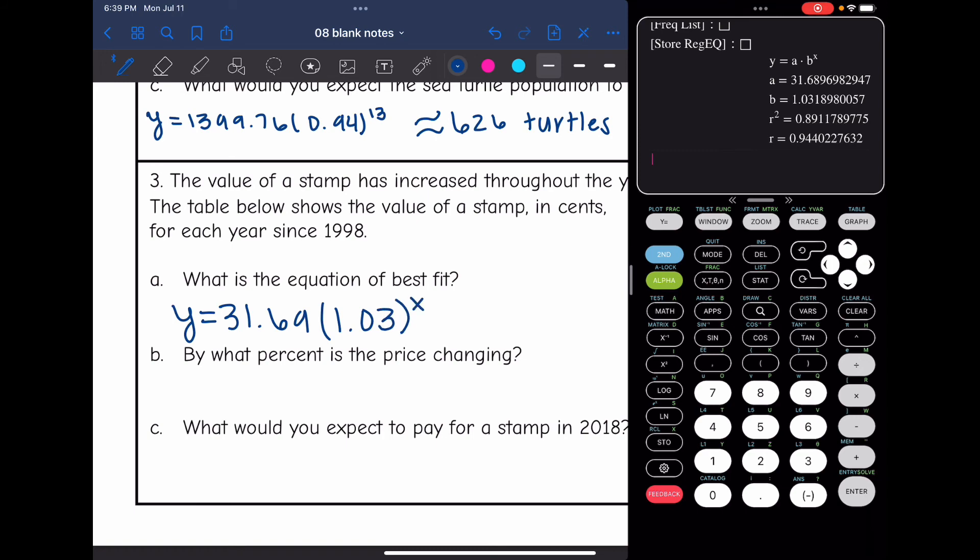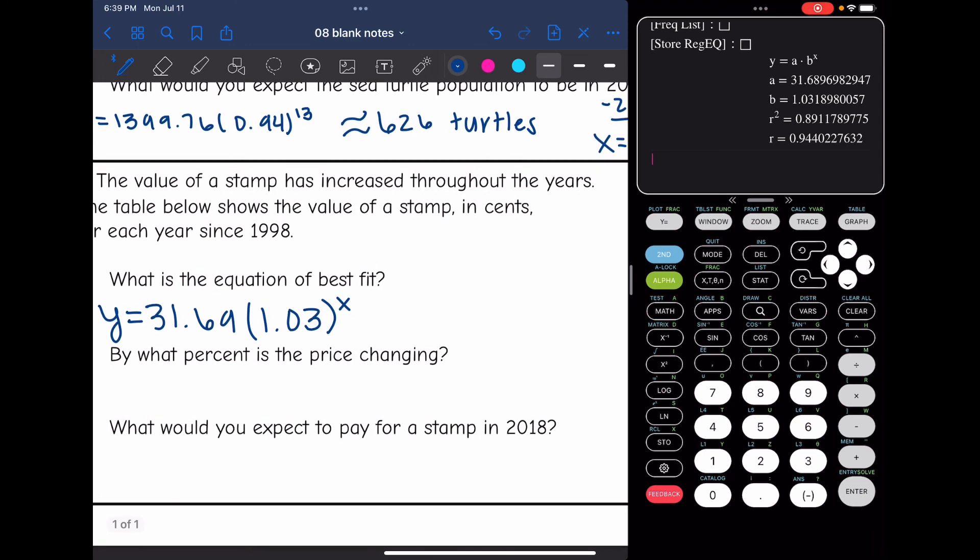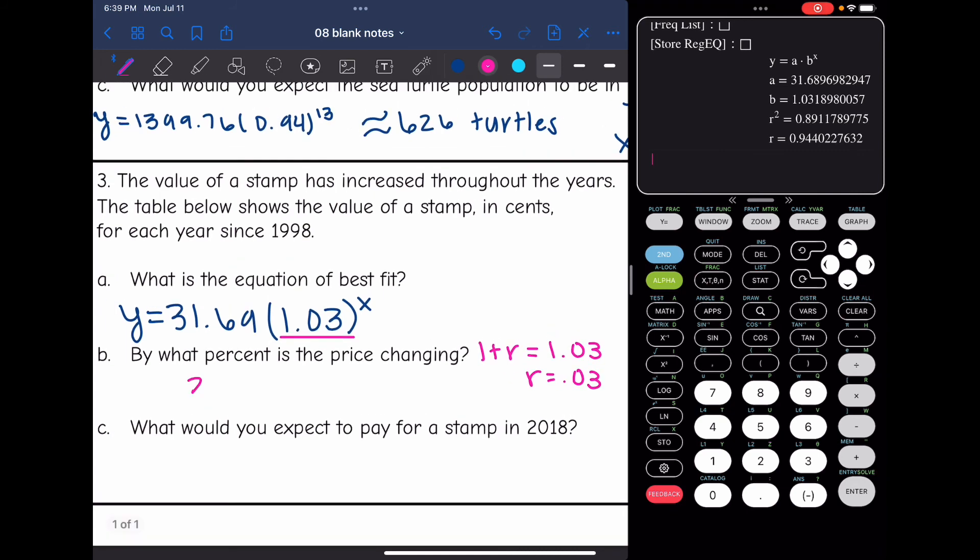And it says by what percent is the price changing? Well, this was growth since we are increasing. So to get that 1.03 value, they did one plus the rate. So that means that the rate must have been 0.03 or 3%.